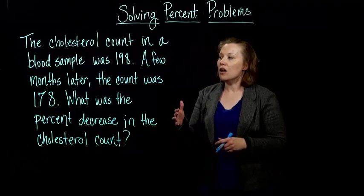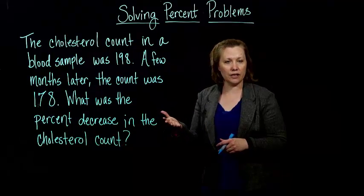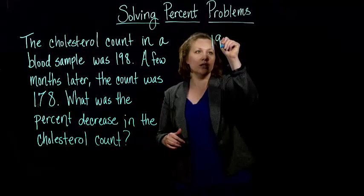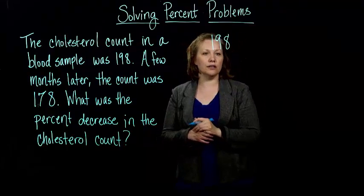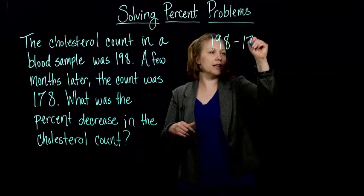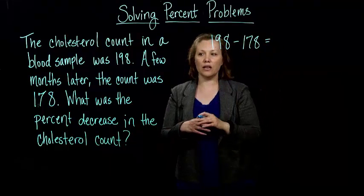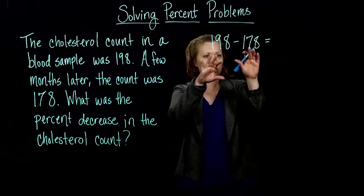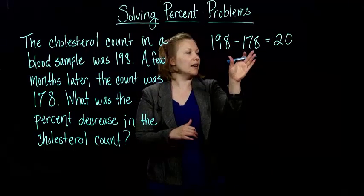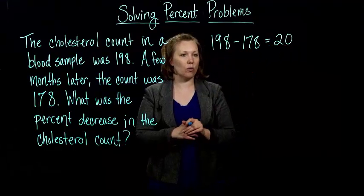So, again, we have to know how much it changed, how much it decreased or increased. Well, to figure out how much it changed, it started at 198 and then it went down to 178. So, if we subtract those two, 198 minus 178, that's going to tell us that it decreased by 20.